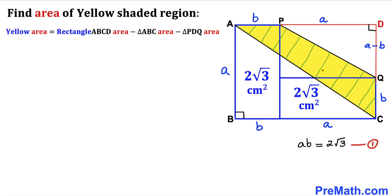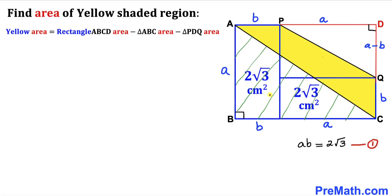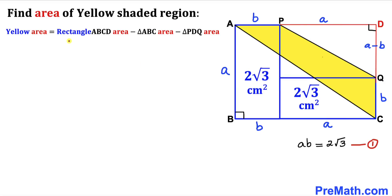Let's make an observation. We can see that the yellow shaded area equals the area of the bigger rectangle ABCD, minus the area of right triangle ABC, and minus the area of right triangle PDQ as well. Our task is to calculate the area of rectangle ABCD, the area of triangle ABC, and the area of triangle PDQ.